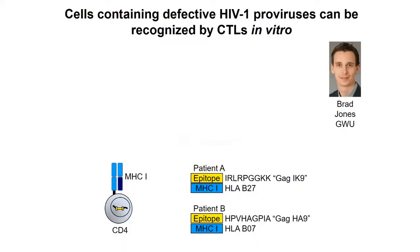Using full-length proviral sequencing data to look at different subsets of proviruses in patients treated with antiretroviral therapy, we found that the longer the patient is infected with HIV, the fewer hypermutations they have and the more large internal deletions they have. To understand this, we collaborated with Brad Jones at George Washington University. We wanted to understand whether these defective proviruses would make any proteins and whether CD8 T cells can see them. For every HIV-infected individual we have certain HLA types, and there are mapped epitopes — for example, a nine amino acid epitope GAKIVK presented by HLA-B27, and Brad Jones had specific CD8 T cell clones recognizing this epitope.